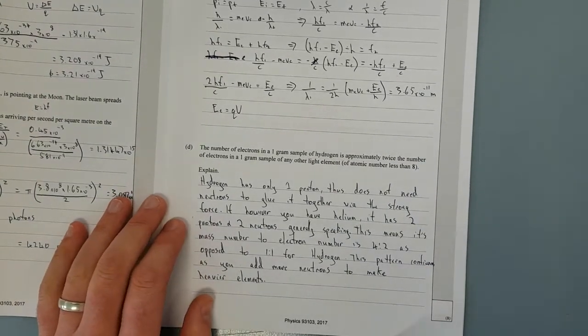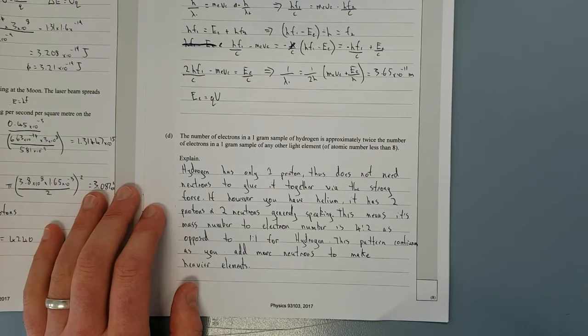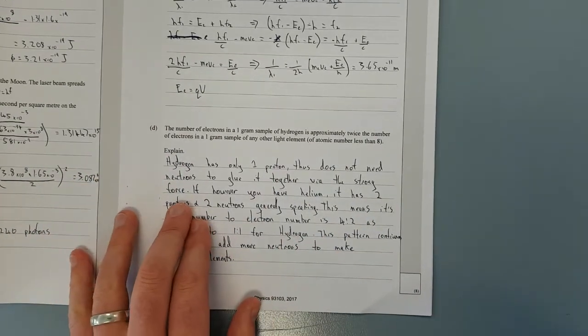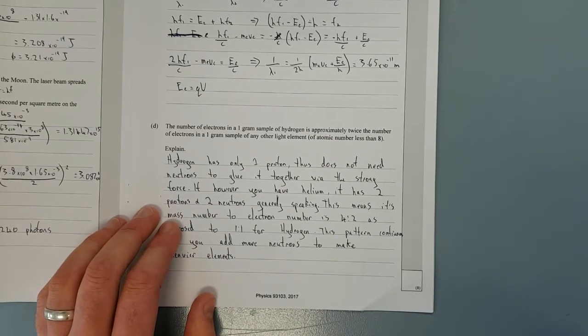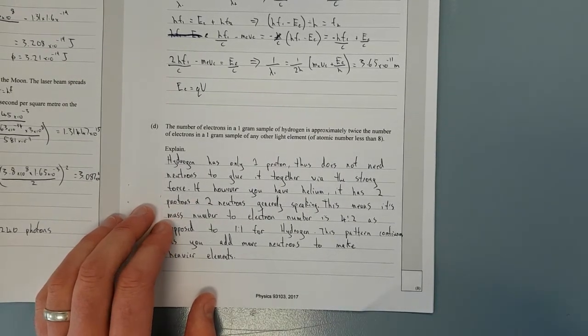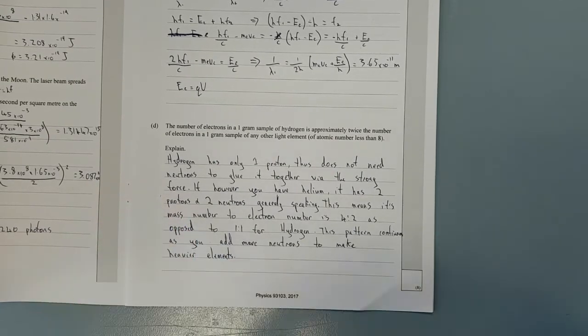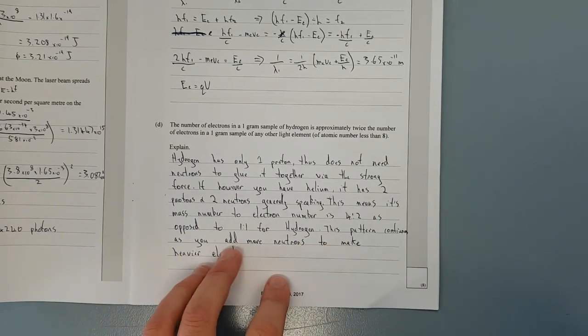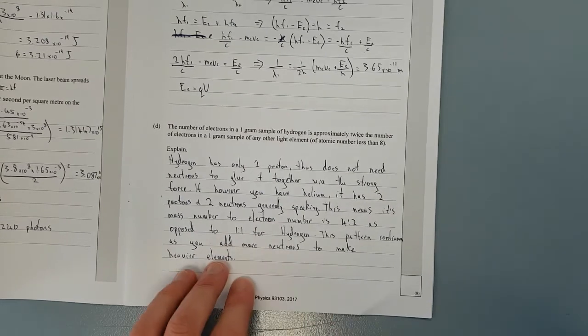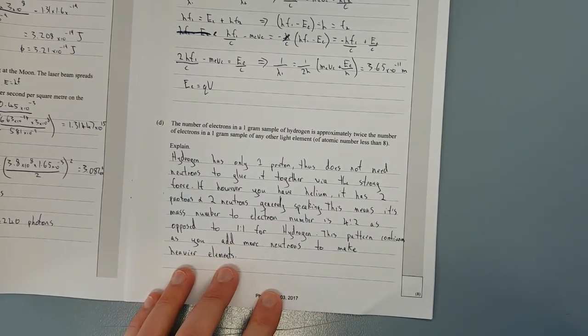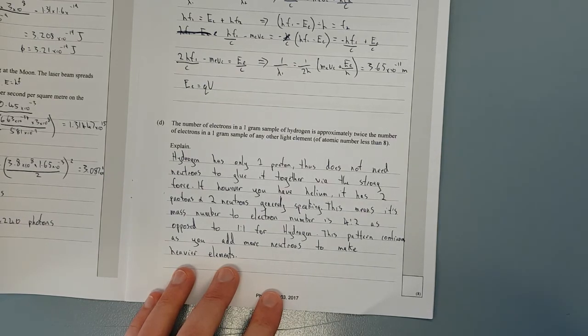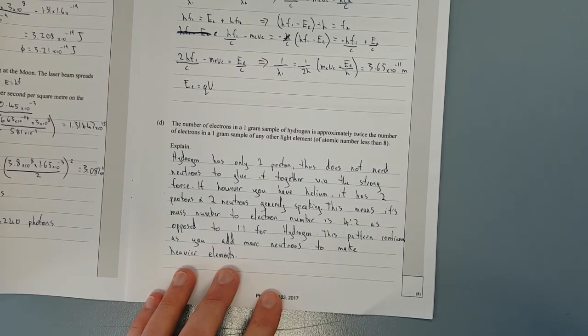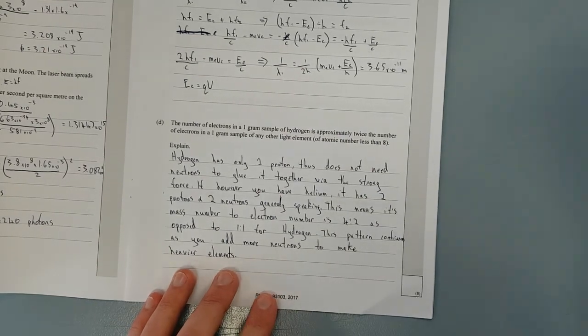Alright, so what I've said is hydrogen has only one proton, thus does not need neutrons to glue it together by the nuclear strong force. If however you have helium, it has two protons and two neutrons, generally speaking if it's not an isotope. This means its mass number to electron number is 4 to 2, as opposed to 1 to 1 for hydrogen. This pattern continues as you add more neutrons to make heavier elements. So for example, if you try to make beryllium, which I'm pretty sure has four neutrons and four protons, you've got a mass number of eight, you only have four electrons because it only has four protons. You get an 8 to 4, in other words a 2 to 1 ratio.